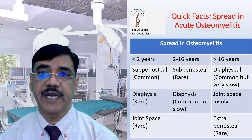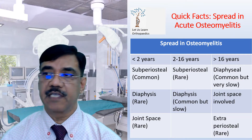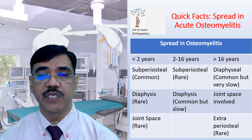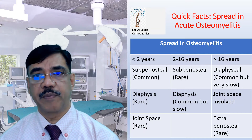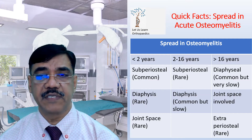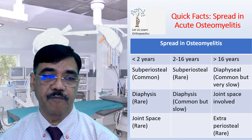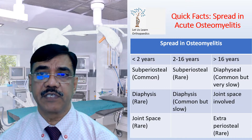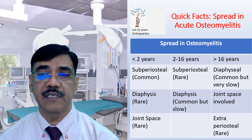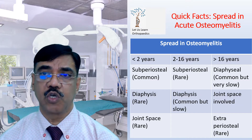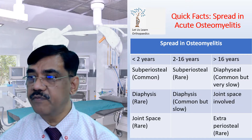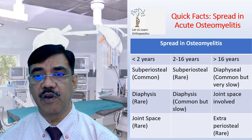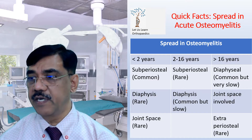The quick facts regarding spread in acute osteomyelitis: in patients less than two years, subperiosteal spread is common, diaphyseal spread is rare, and joint spaces are involved rarely. In children between 2 to 16 years, subperiosteal spread is rare, diaphyseal spread is common but slow. In children after 16 years, diaphyseal spread is common but very slow, joint space is involved often, and extraperiosteal spread is very rare.